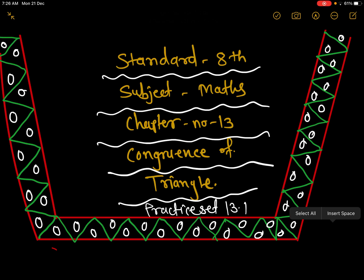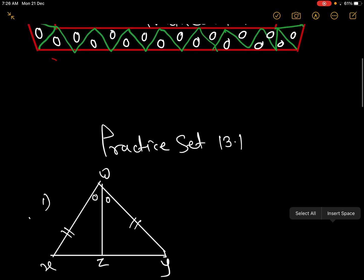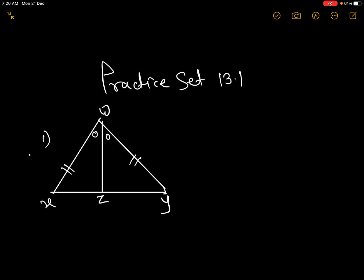Standard 8th subject maths, chapter number 13, Congruence of Triangles. Here we see Practice Set 13.1. In each pair of triangles in the following figures, parts bearing identical marks are congruent. State the test and correspondence of vertices by which triangles in each pair are congruent.